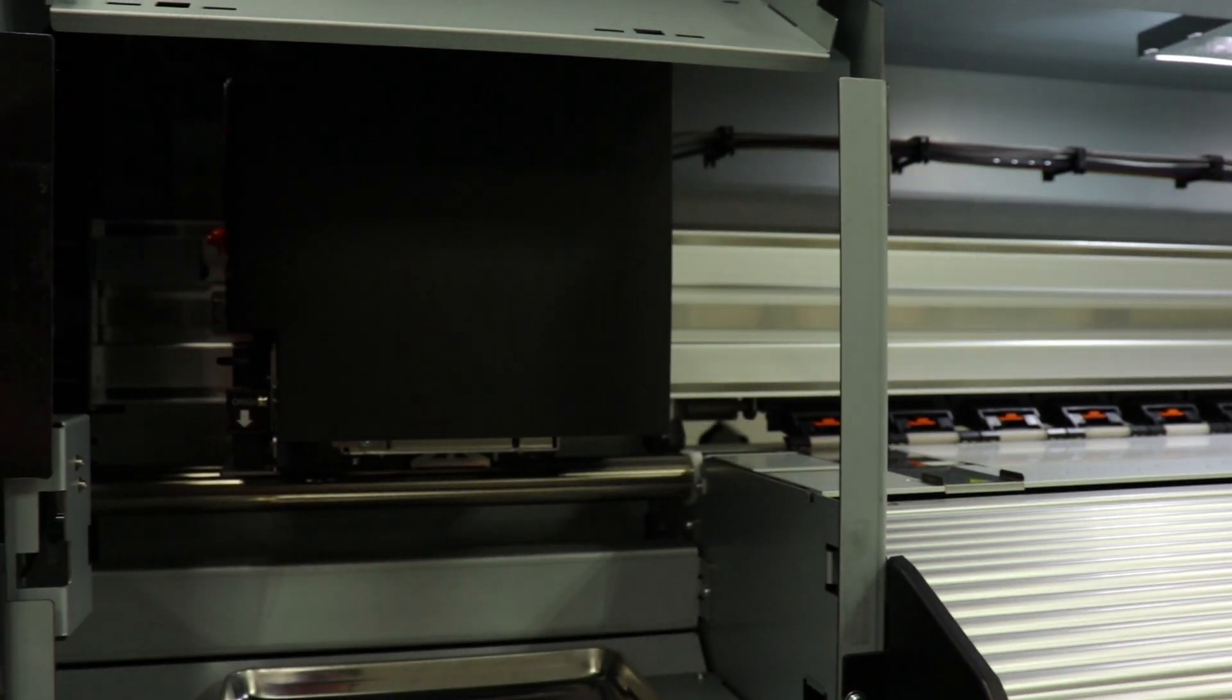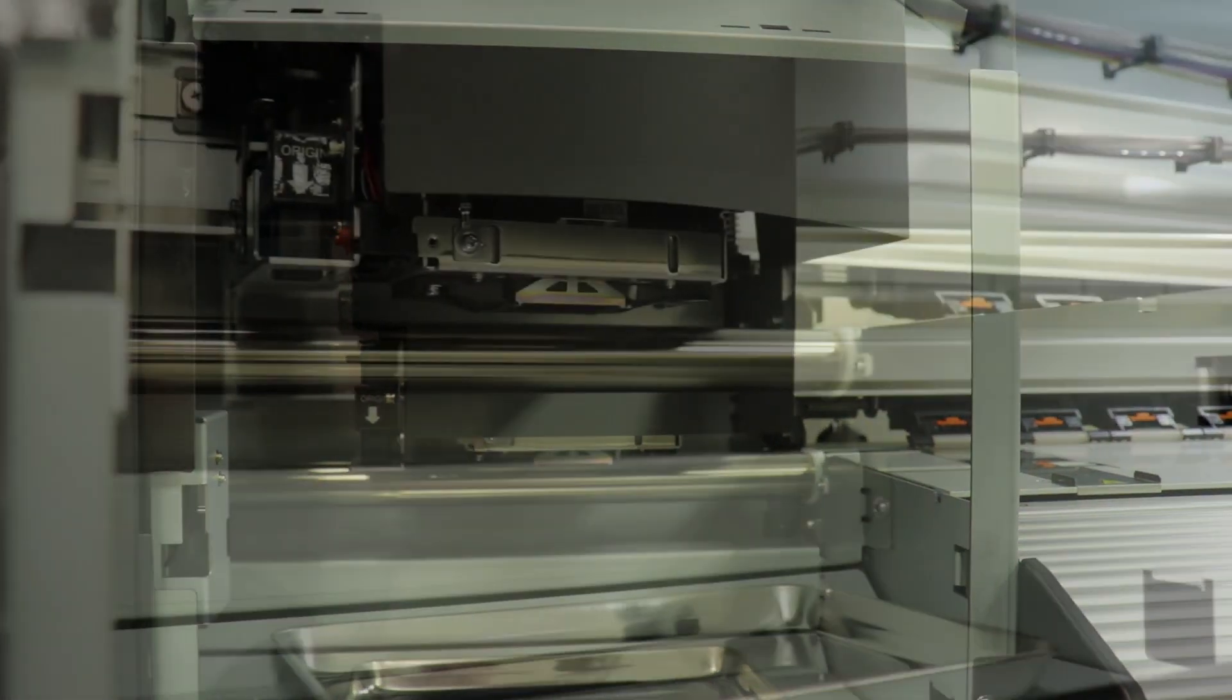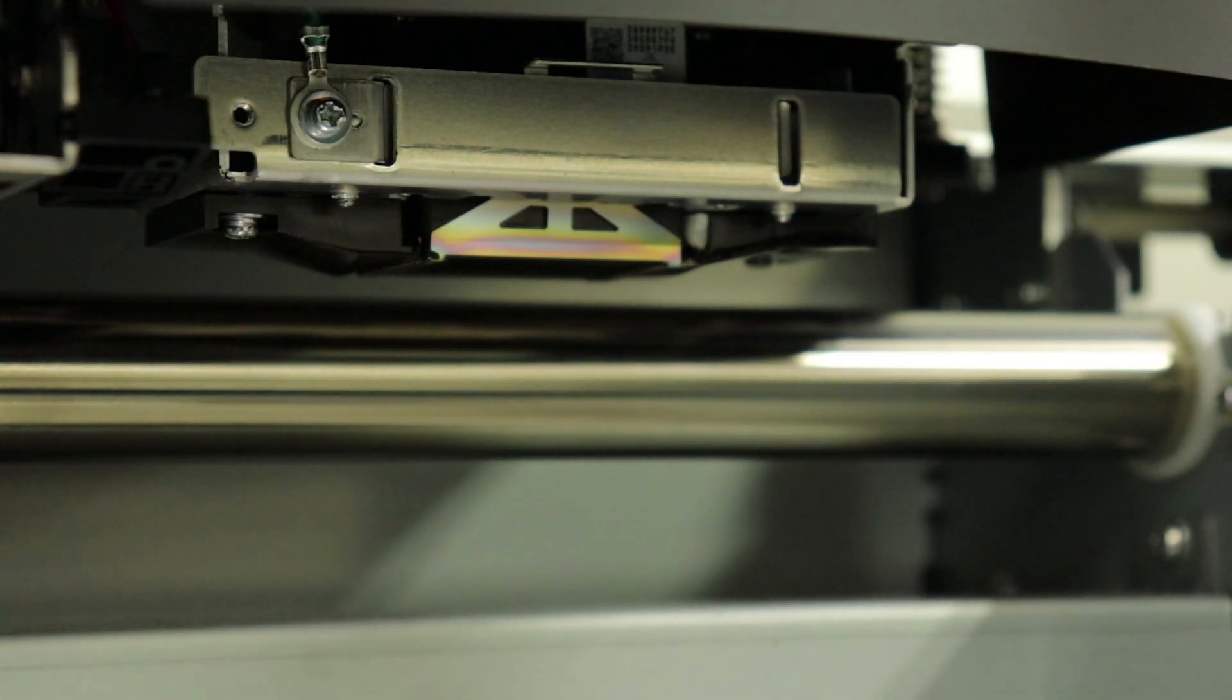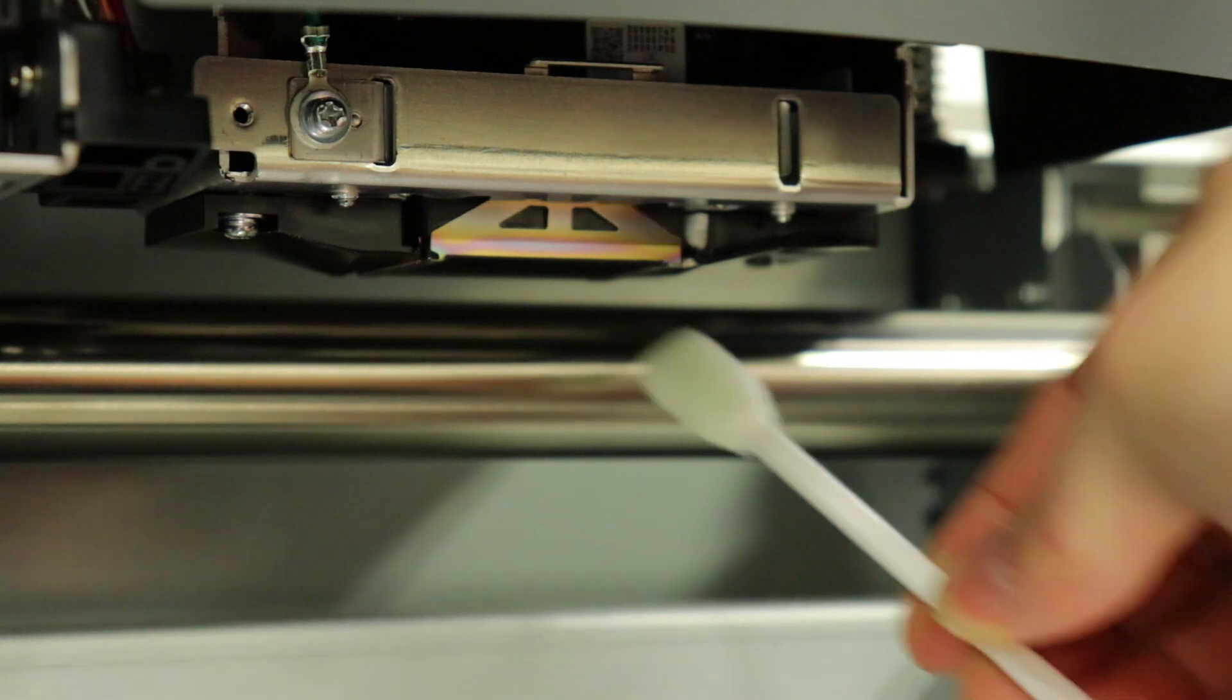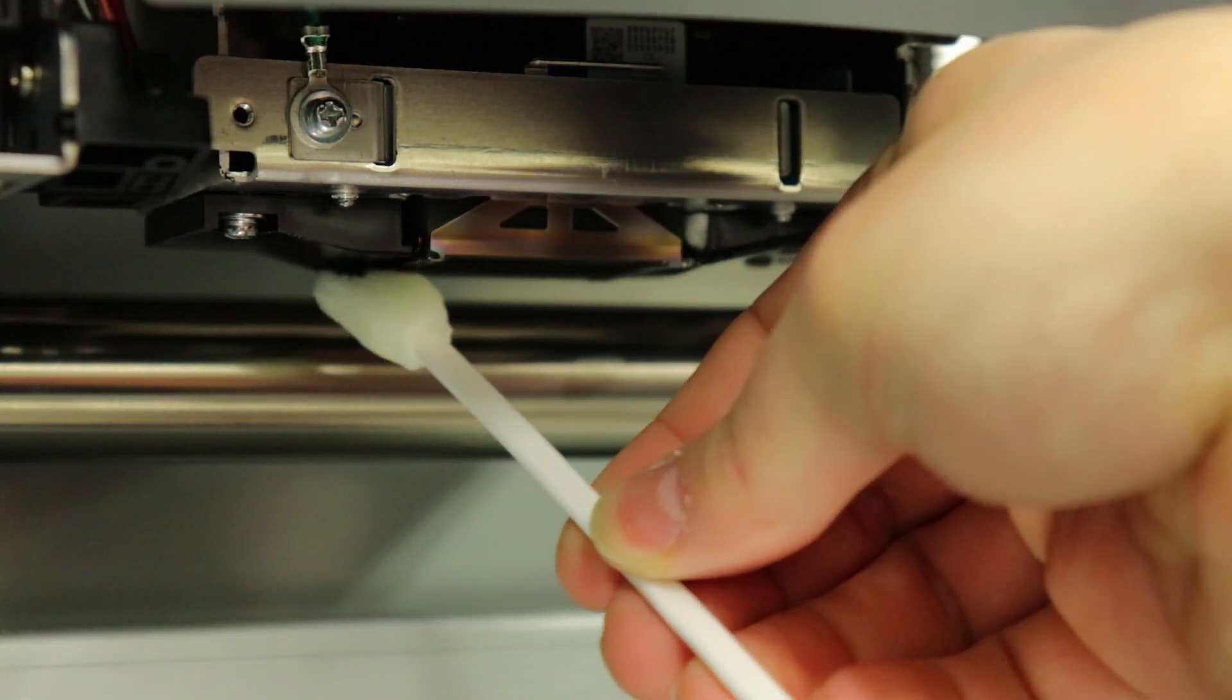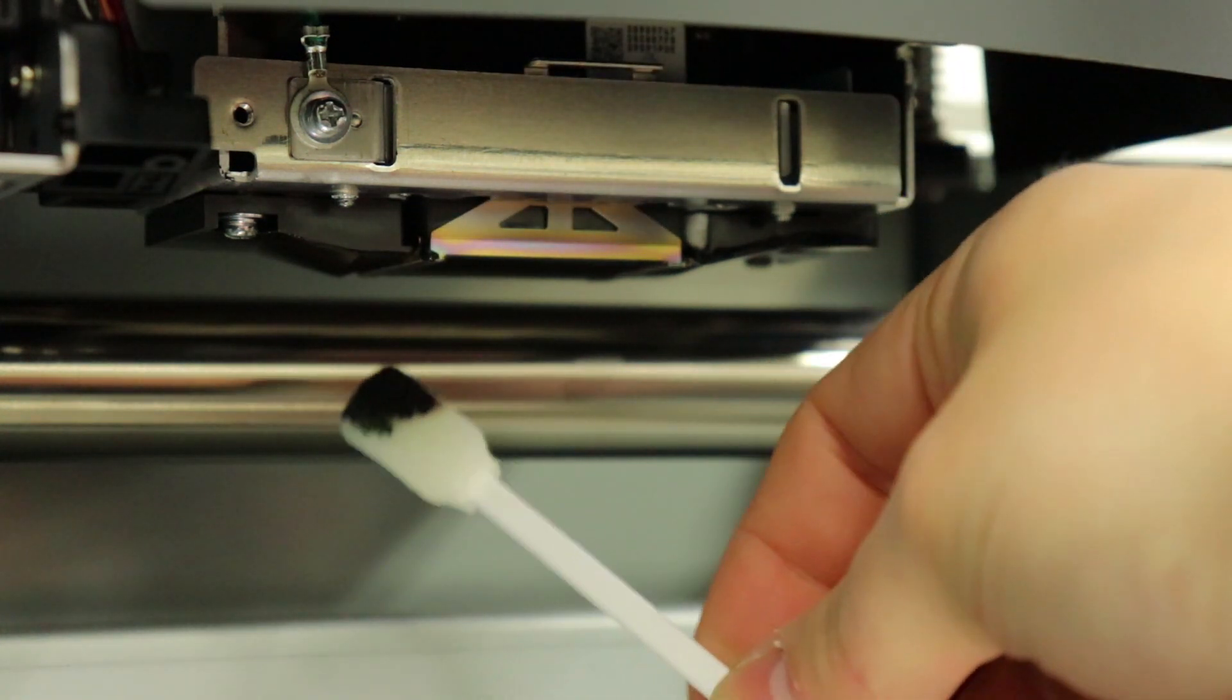Next, let's head over to the left side of the printer. Take a new clean swab with cleaning solution on it and carefully clean the bottom edges of the printhead. Make sure you don't actually touch or clean the nozzle plate as this may cause damage to the printhead.